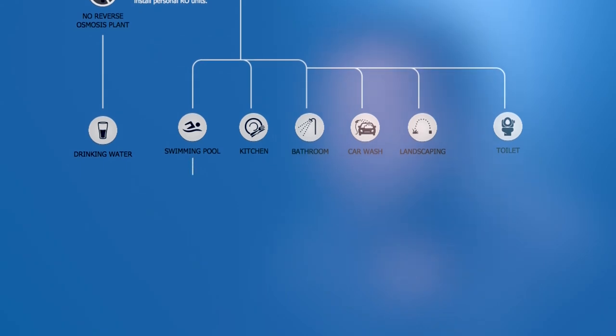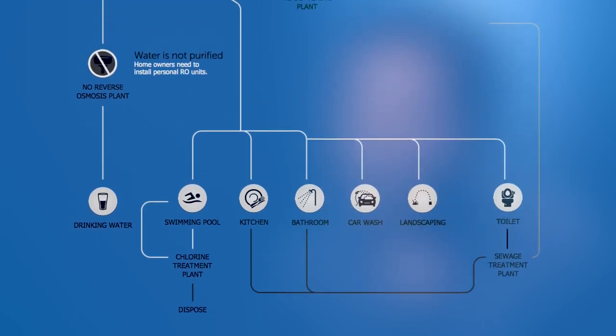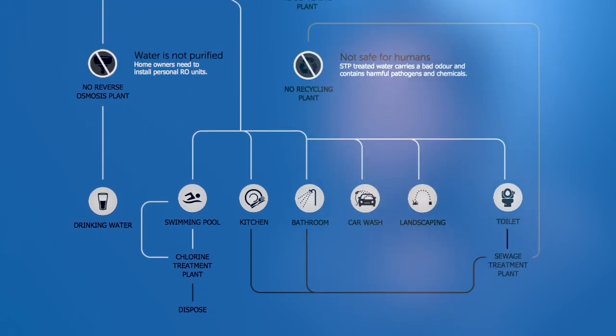The used water that is drained from kitchen, bathroom and the toilets is sent to a sewage treatment plant. Since the water contains output from the toilet, it is called black water. This black water is treated to an extent and is then reused for watering your gardens, washing your car and filling the flush tanks in your toilets.